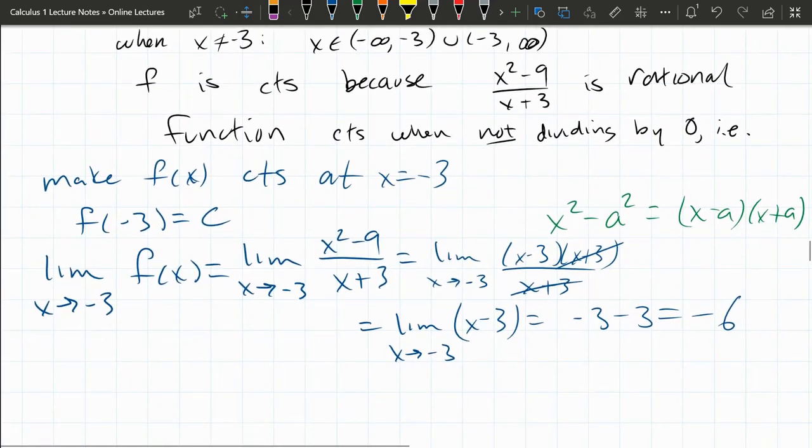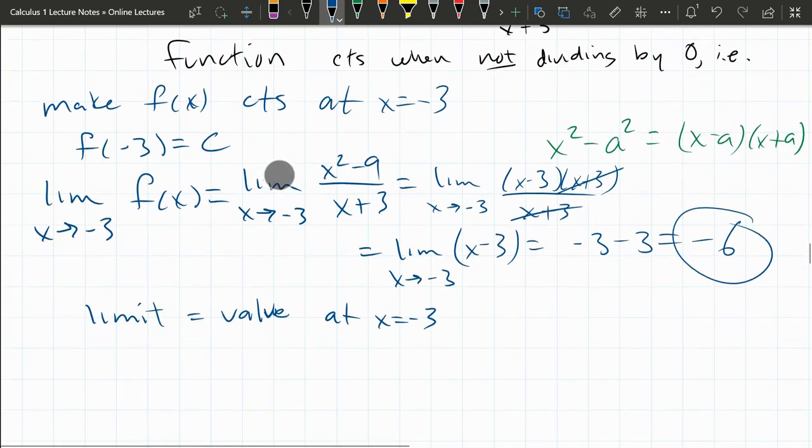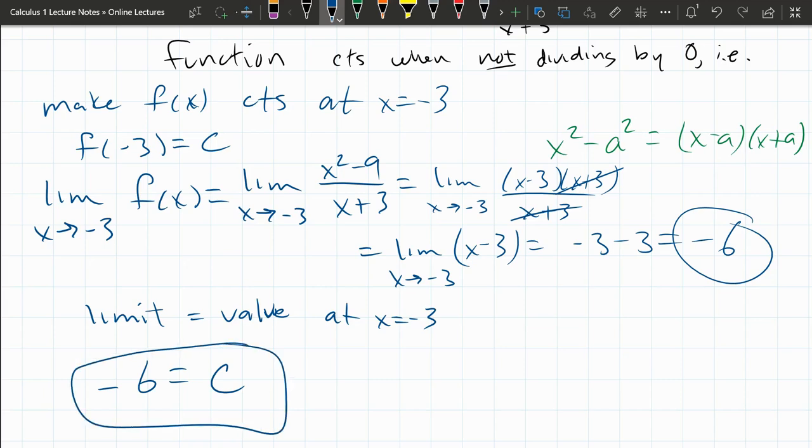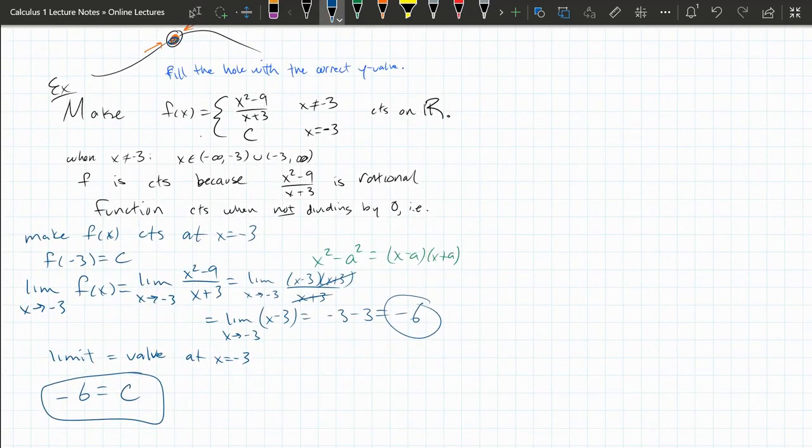So this is our limit value. And remember, the definition of continuous, the limit value needs to equal the function value. So the limit needs to equal the value at x equals negative 3. And we got the limit was negative 6. The function value is c. So the c value has to be negative 6. And what that will have done is we filled in the right y value here so that hole that was in the function is now filled with the correct y value.